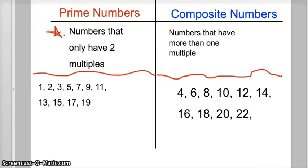So that's the end. Prime numbers are numbers that only have two multiples. Some examples are one, two, three, five, seven, nine, eleven, thirteen, fifteen, seventeen, and nineteen.